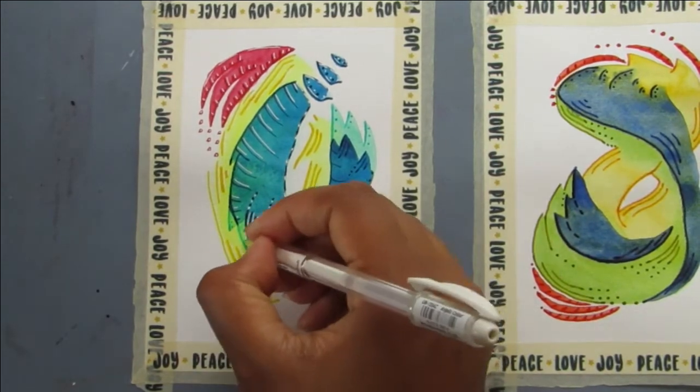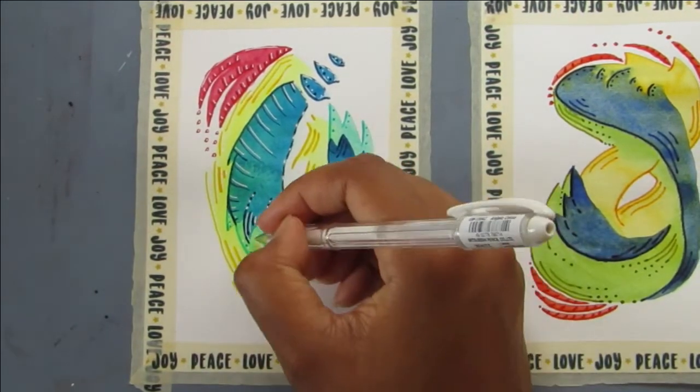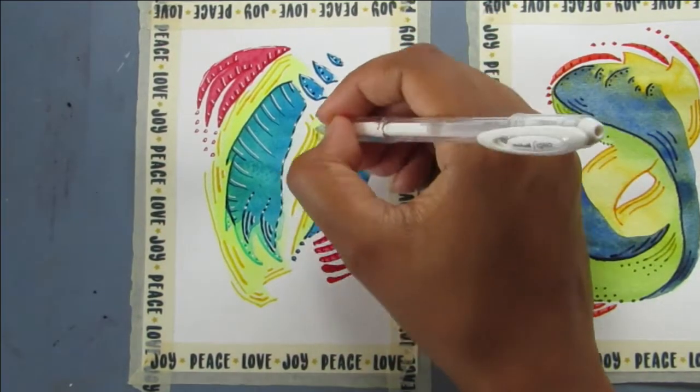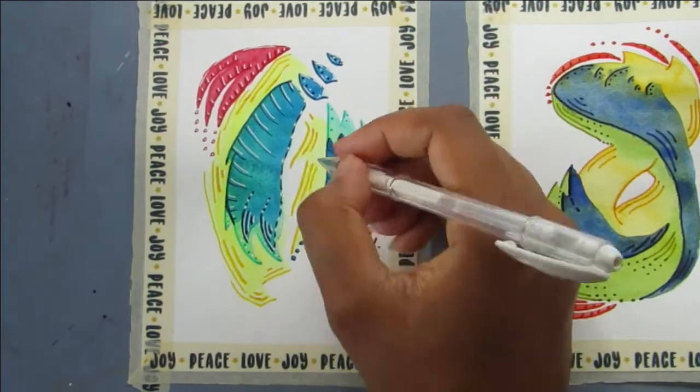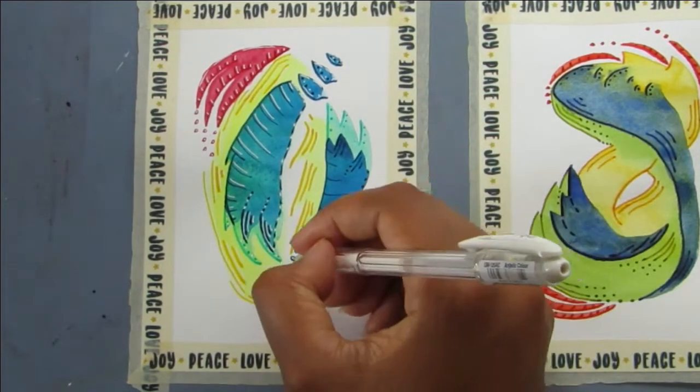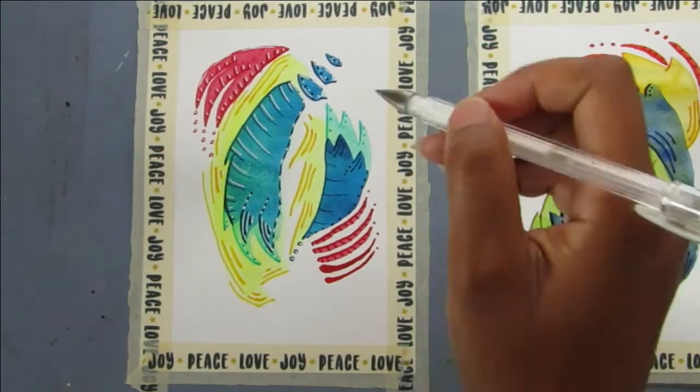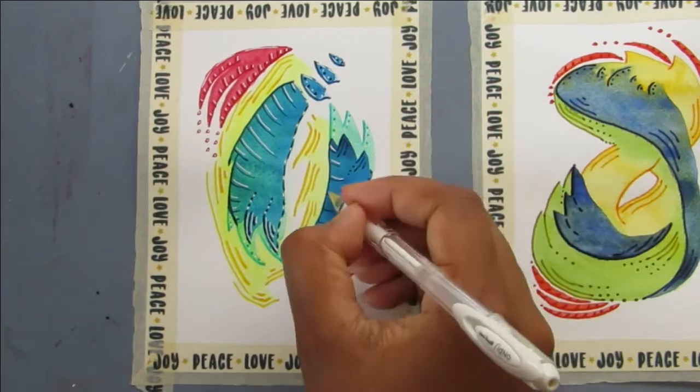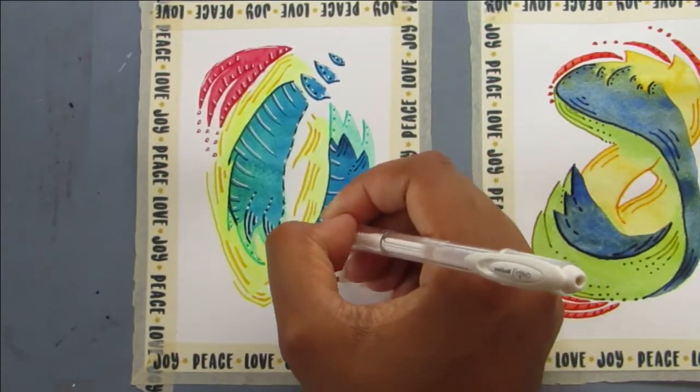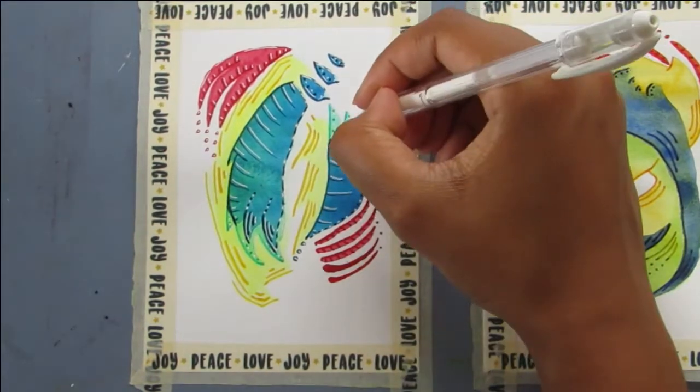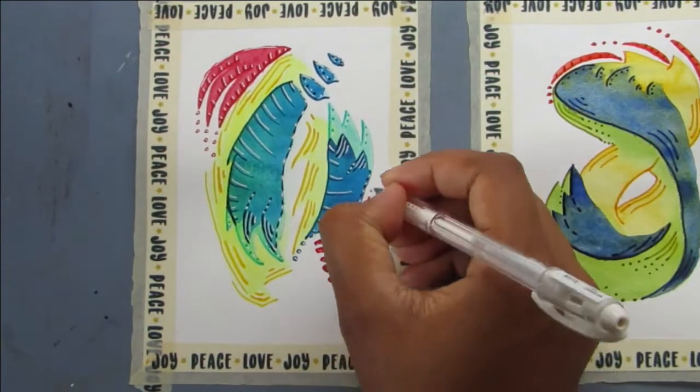Once I did that I was able to go in with a Uni-pin brush marker. I used the brush marker instead of the fine liners, because then I could vary the thickness of the line how I wanted it. Some areas I wanted to have a slightly thicker line, and then some a slightly thinner line. So I thought instead of using a bunch of different fine liners I would just use the brush marker.